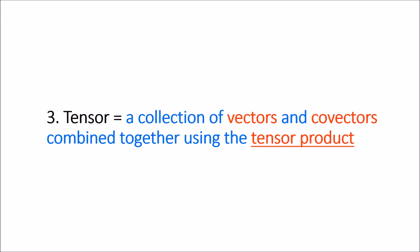You may recall the other definition I gave for tensors: tensors are just collections of vectors and co-vectors combined using the tensor product, and this is the best definition for tensors we can come up with. We know what vectors and co-vectors are. What we're going to do next is go through an explanation of the tensor product — and once we understand that, we'll understand this best definition of tensors.